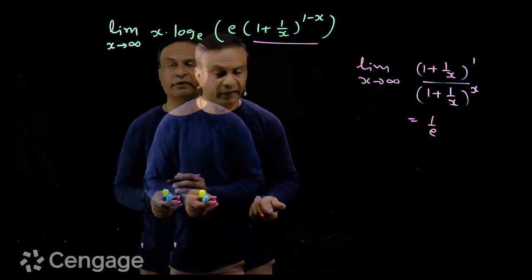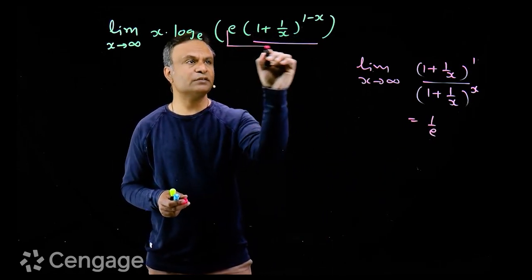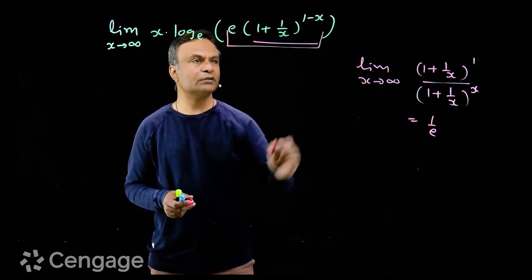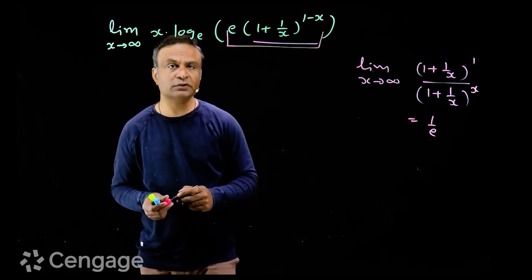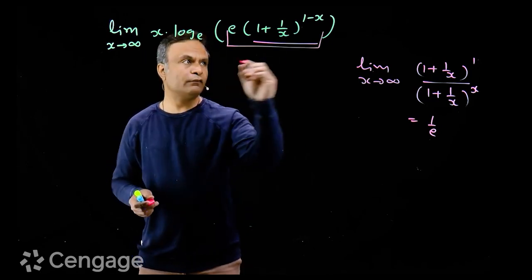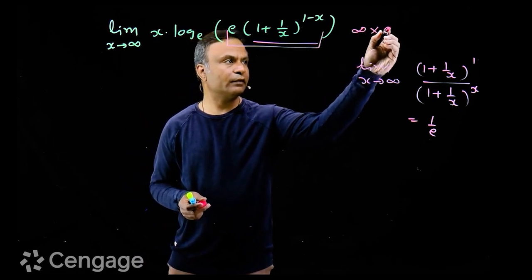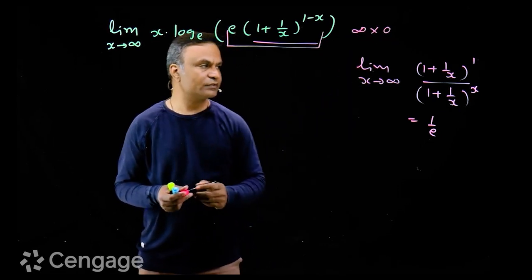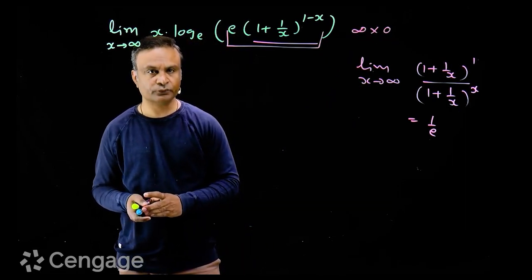So when x tends to infinity, this limiting value is 1, and log of 1 tends to 0. So we have here the form infinity multiplied by 0, which is an indeterminate form.